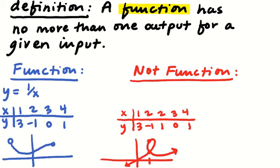Algebraically, one thing you've come into contact with is something like y squared equals x. You need to take the square root of both sides, and of course remember to include the plus or minus. So it's y equals plus or minus the square root of x. This is not a function because if you choose x equals 9, y could be positive 3 or negative 3.